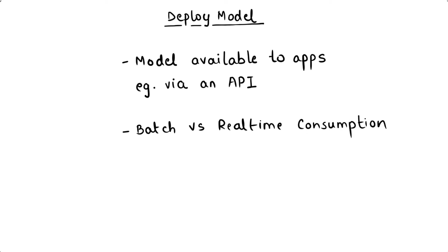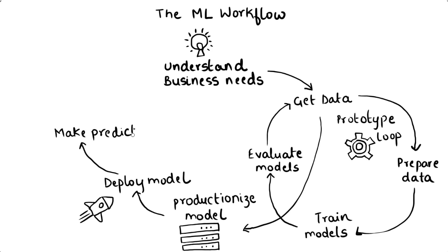For real-time consumption, a trigger initiates the process of using the model to serve a prediction. For example, deciding whether a transaction is fraudulent when a payment is initiated requires real-time predictions. You have to consider how quickly predictions must be served — in milliseconds or seconds — as well as the volume of demand and size of data. The product manager, data scientists, and machine learning engineer work together to determine the needed latency and look at ways to improve serving latency, such as using a smaller model or GPU accelerators.